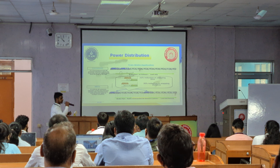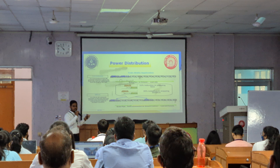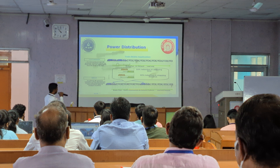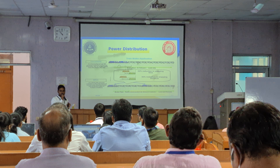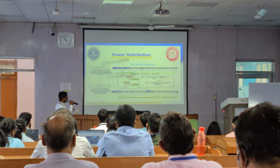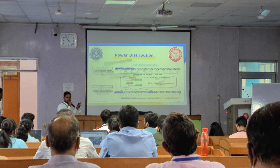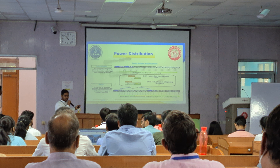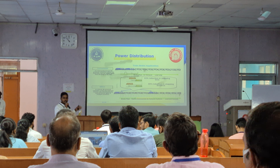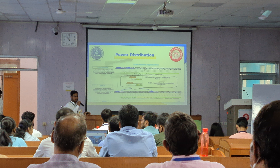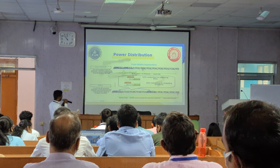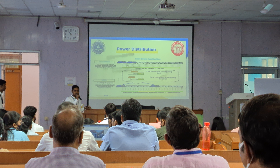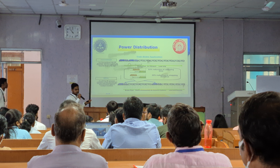Faster brake application is achieved in DP WCS. The BP pressure, in a conventional configuration, is reduced from the front part only. But in DP WCS, it is reduced from the front part as well as from the remote locomotives. This results in a 22% reduction in stopping time and a 30% reduction in stopping distance.